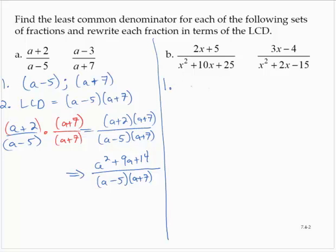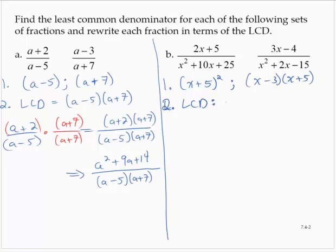Exercise B. The first denominator, x² + 10x + 25, factors as (x + 5)². The second denominator, x² + 2x - 15, factors as (x - 3)(x + 5). So for the LCD we have a factor of (x - 3) and a factor of (x + 5). Choosing the higher power, we use (x + 5)², giving an LCD of (x - 3)(x + 5)².